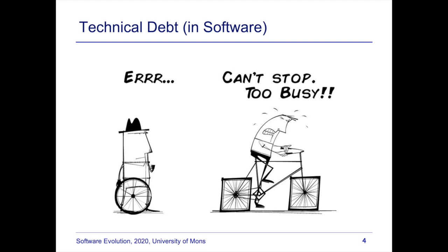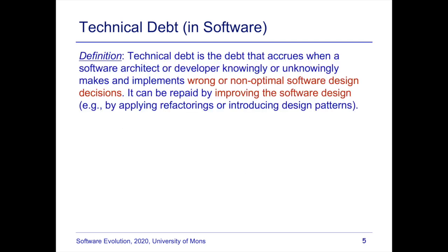The idea of technical debt in software takes this analogy with financial debt and applies it to software development. Whenever you are developing software, you might make wrong or non-optimal design decisions, and because of this the quality of your software is not optimal and it will become harder and harder to make changes — this notion is known as technical debt.